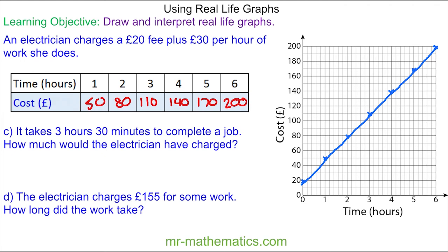So for question C, we're told it takes three hours 30 minutes to complete a job, and we're asked to work out how much the electrician would have charged for this time. So we have three and a half hours here, we go up to our line and then we go across. And you can see that will be £125.